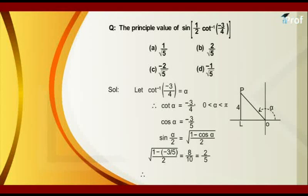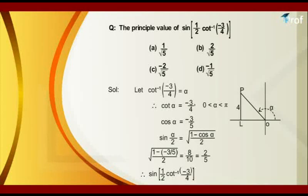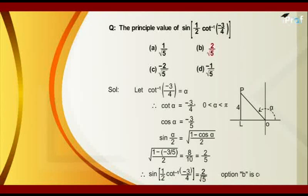Therefore, sin of alpha by 2, meaning one-half of cot inverse of minus 3 upon 4, is equal to 2 upon root 5. Hence, choice B is correct.